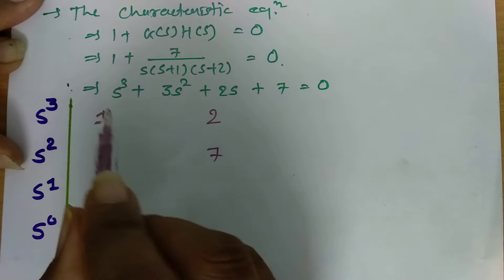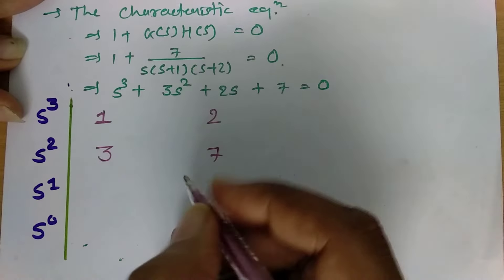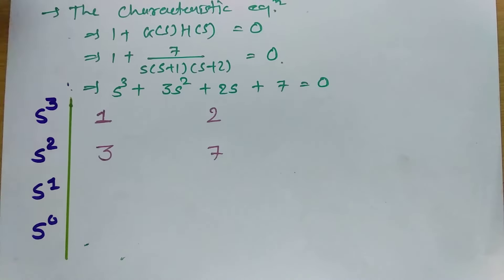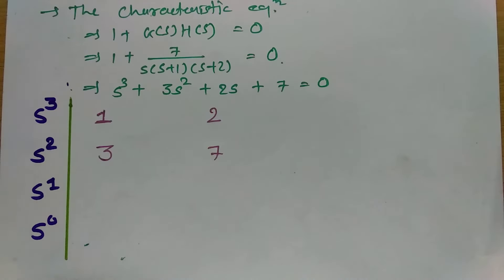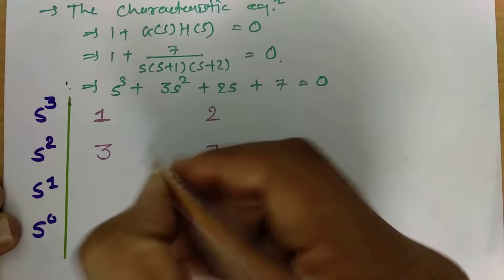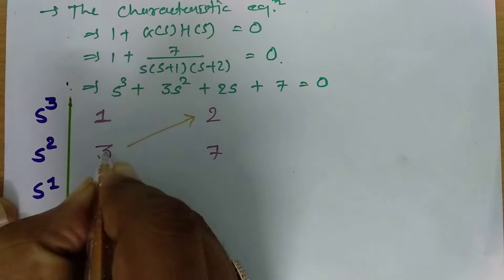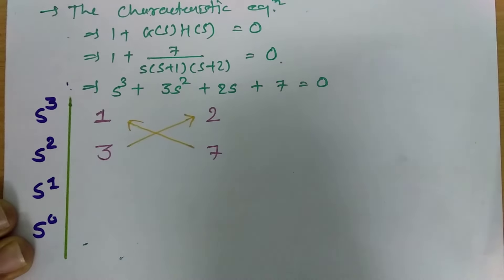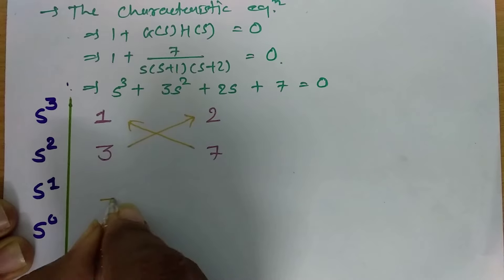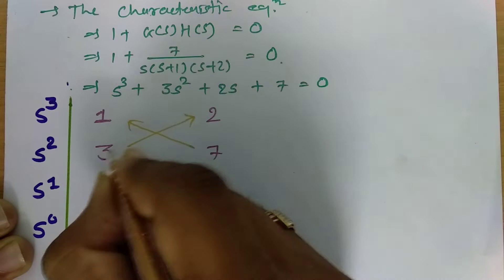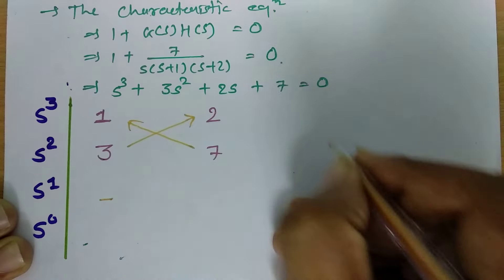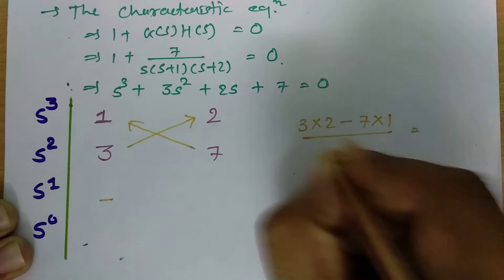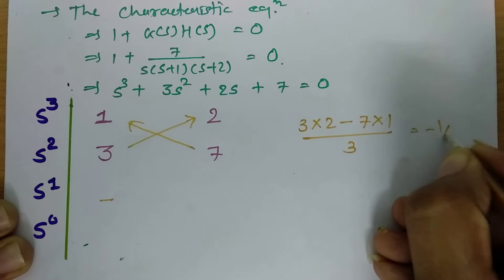To identify the other elements in the Routh matrix, we do cross multiplication: (3×2 − 7×1) divided by 3. Calculating this gives 6 minus 7, which is −1/3. So the next coefficient in the s¹ row is −1/3.